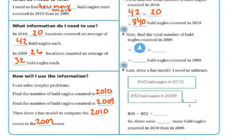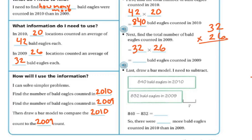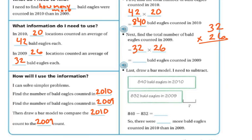Next, we're going to find the total number of bald eagles counted in 2009. In 2009 there were 26 locations with 32 bald eagles, so we do 32 times 26. I'm going to do this by regrouping. First, I'll do my ones position, which is six. Six times two is 12 — regroup my one. Six times three is 18, plus my one is 19. Now I'm done with my ones position, so I'm going to cross it out.